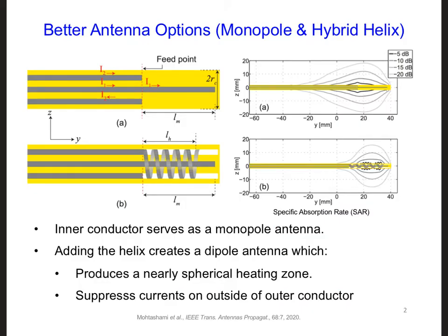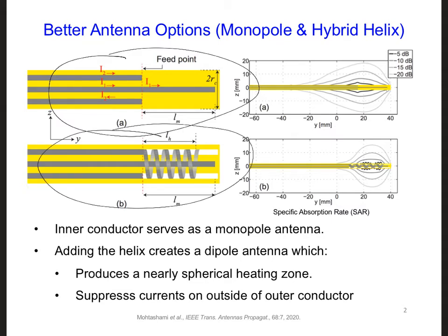Last time, we talked about possible antenna designs for our tumor-destroying system, and we started to consider both a monopole antenna and a hybrid helix. The hybrid helix was found to have more favorable properties, so let's consider that one further.